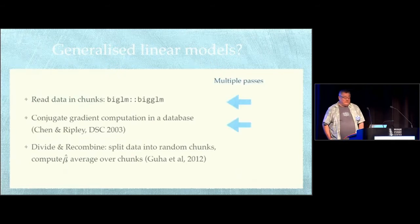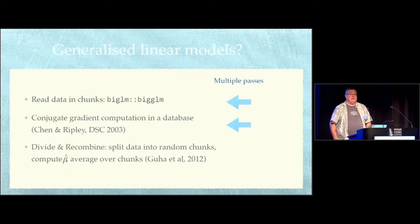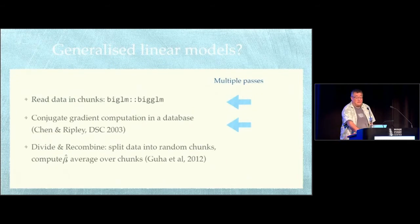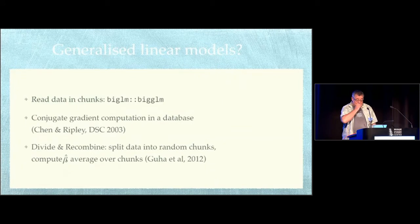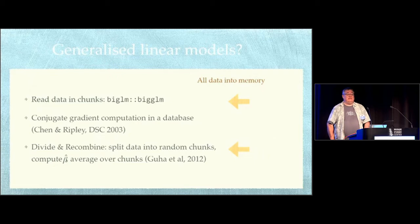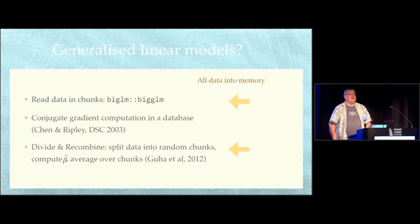Now the first two of these approaches make multiple passes over the whole data set. If you're doing say five iterations, you look at all the data five times, which is not ideal. Also, the first and last of those, all the data has to come into memory from wherever it lives. And again, that's not ideal if you've got moderately large data.